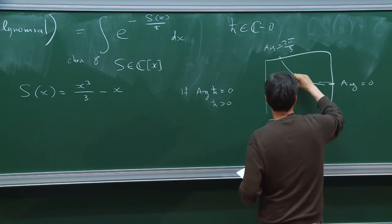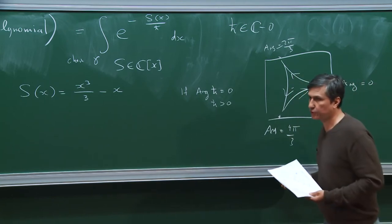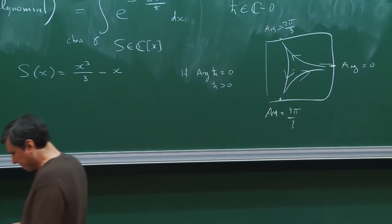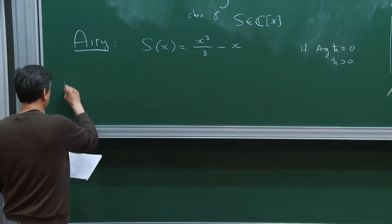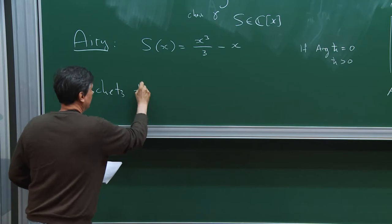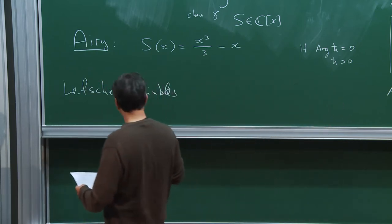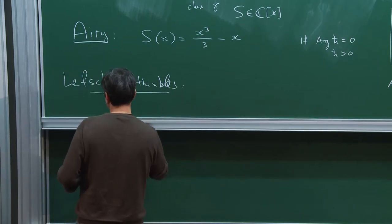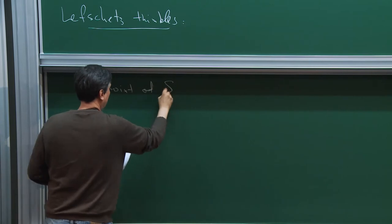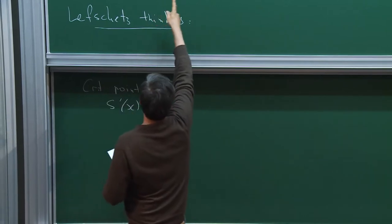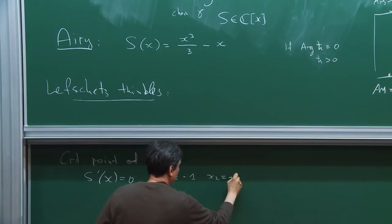That gives three directions and three possible chains of integration, but only two are independent because their sum is zero. So you get two interesting integrals for each h-bar to study. The Lefschetz thimbles provide another way. To draw Lefschetz thimbles, start with critical points of the action — solve S'(x) = 0. With the 1/3 factor, the solutions are x₁ = −1 and x₂ = +1, giving two critical points.